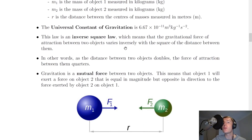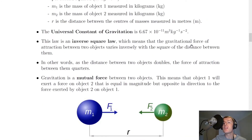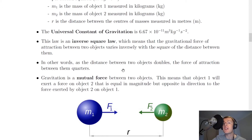This law is an inverse square law, shown by the 1 over R squared value, which means that the gravitational force of attraction between two objects varies inversely with the square of the distance between them. In other words, as the distance between two objects doubles, the force of attraction between them quarters.